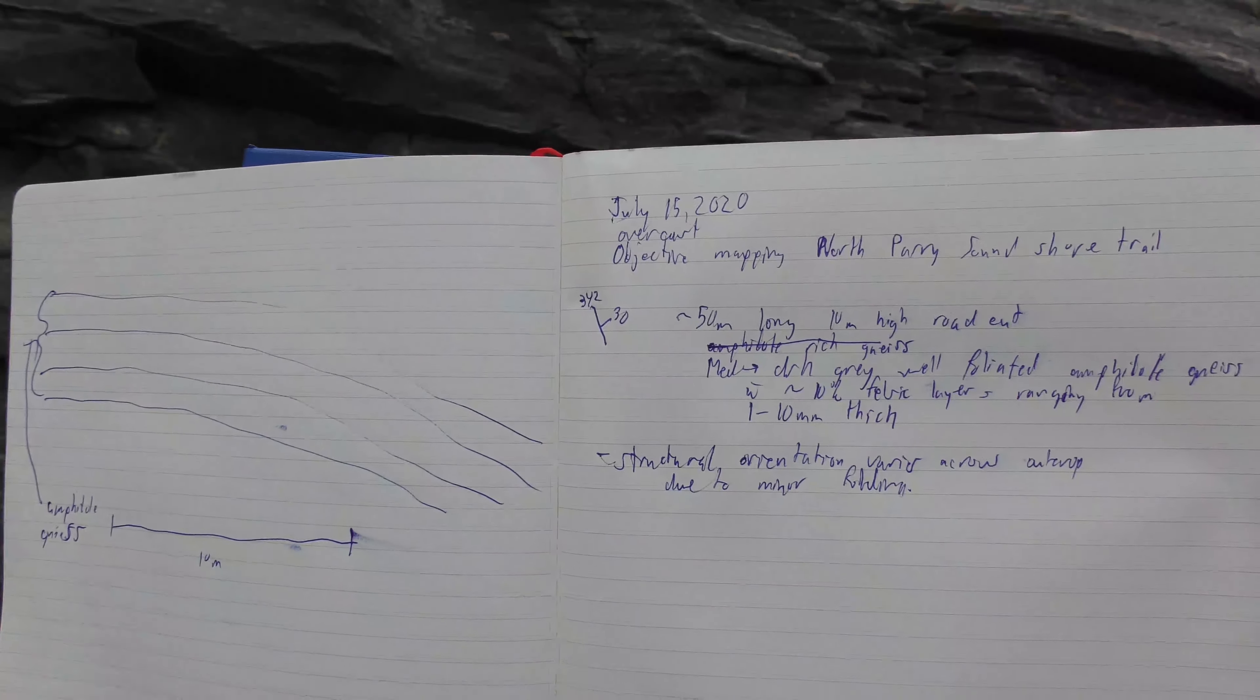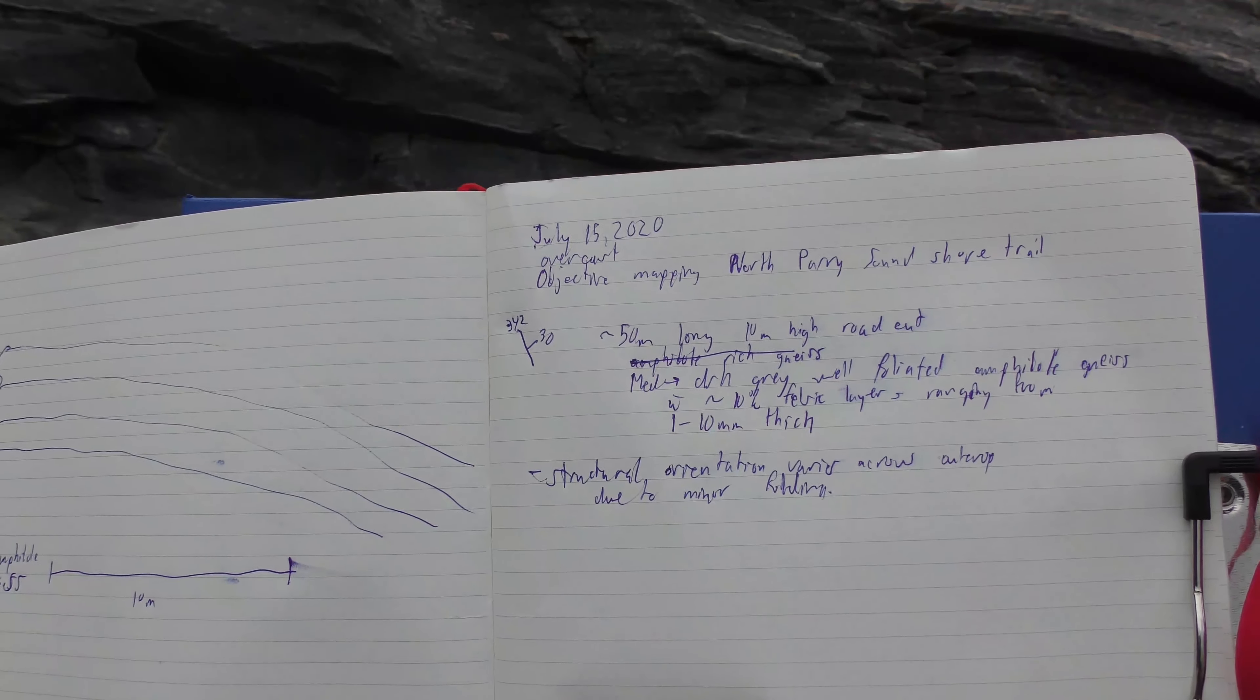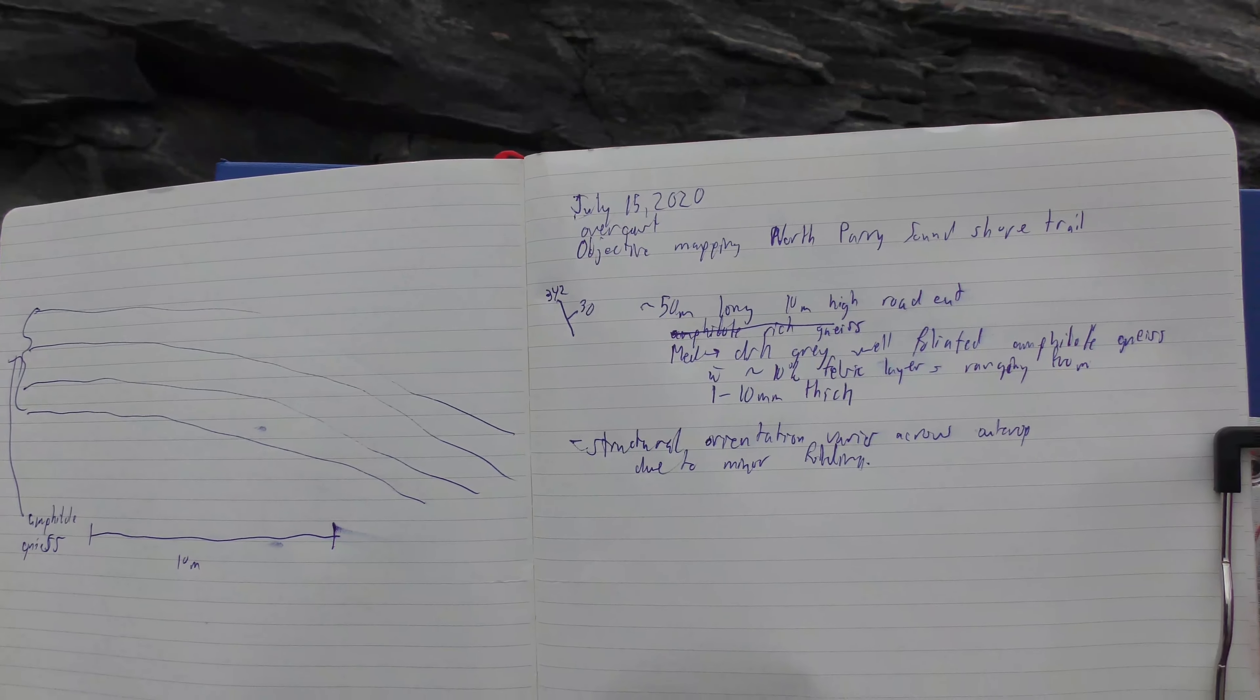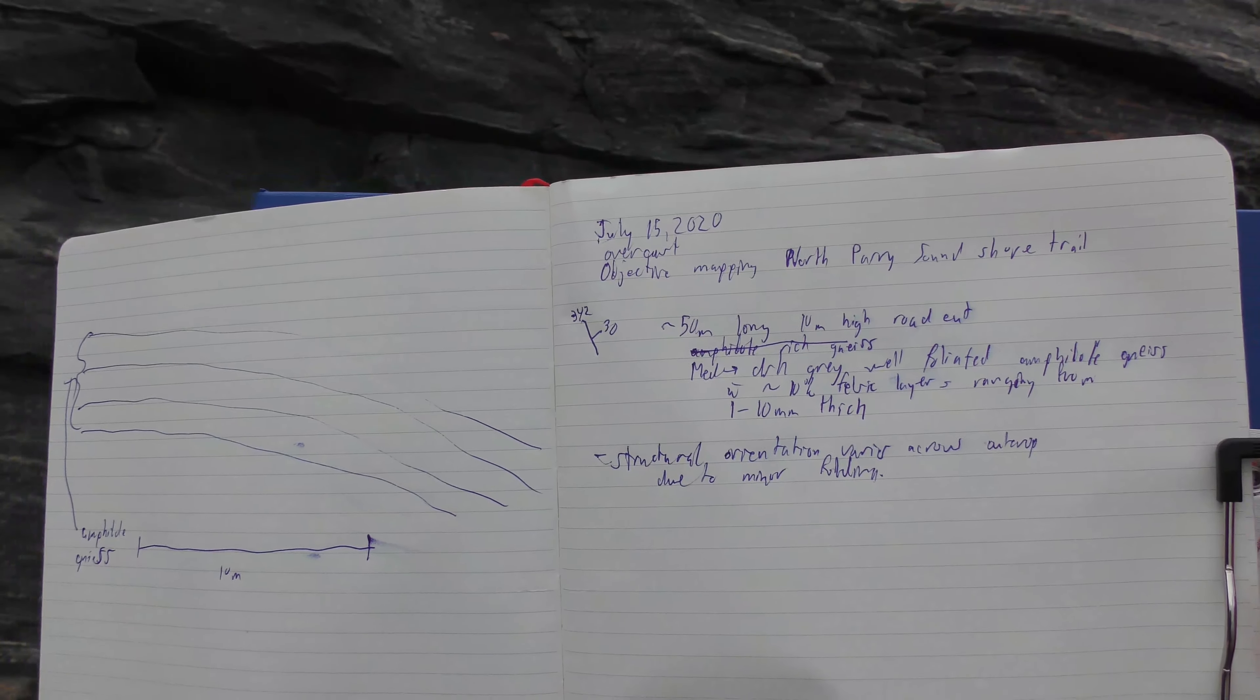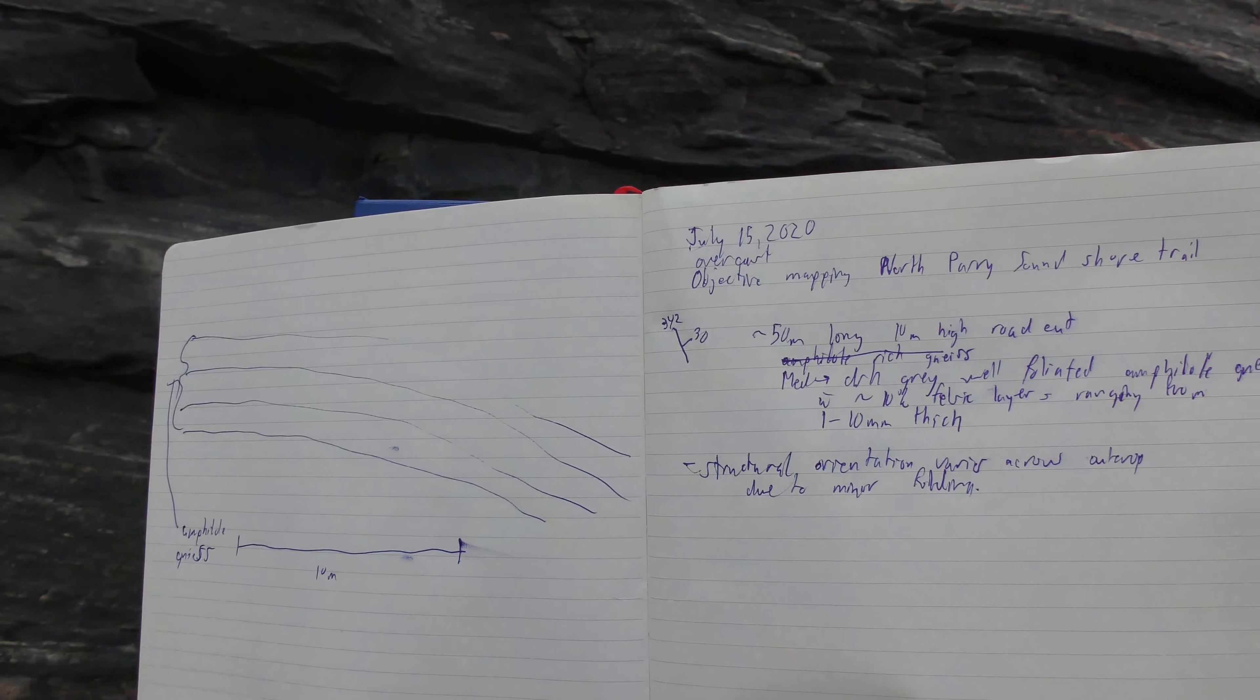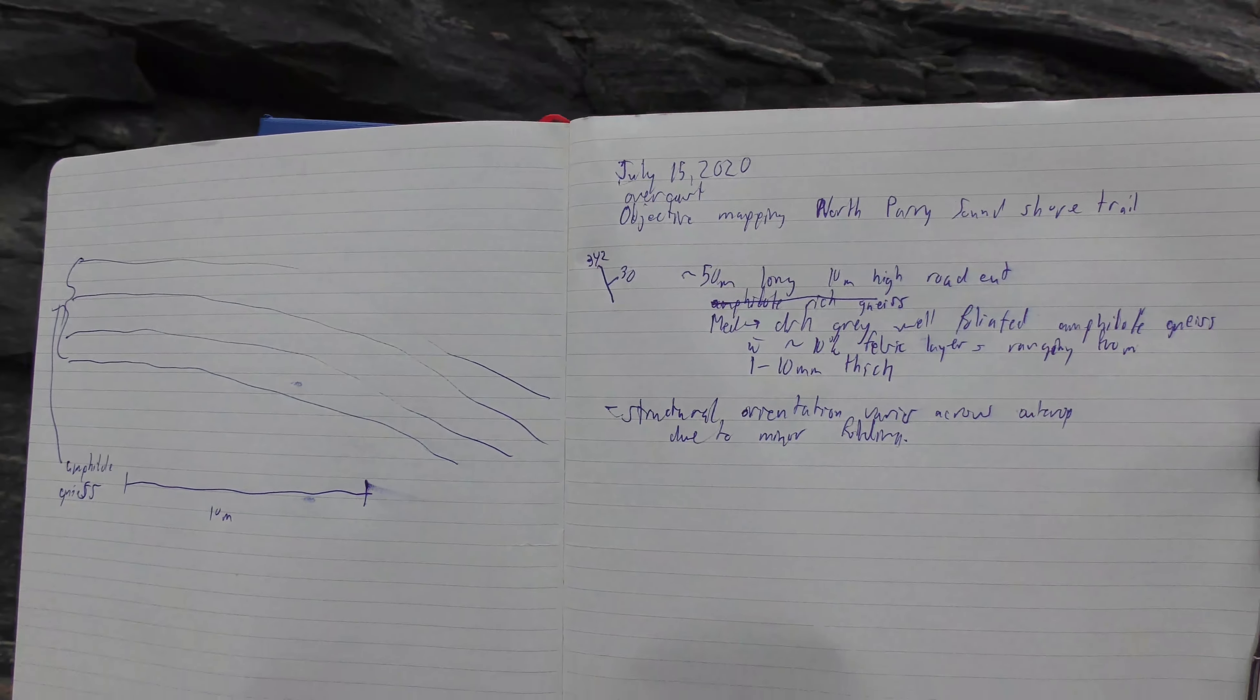And that's sort of how you should approach each site and do a notebook description and a brief sketch, highlighting the important parts of the outcrop that may not show up on your map or may explain some variance in your stereo net when you start plotting these up.